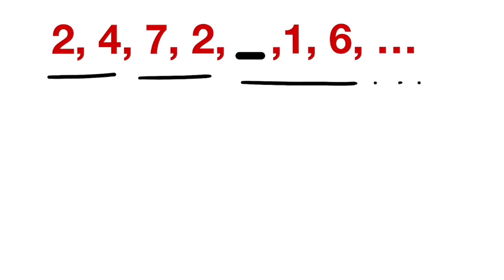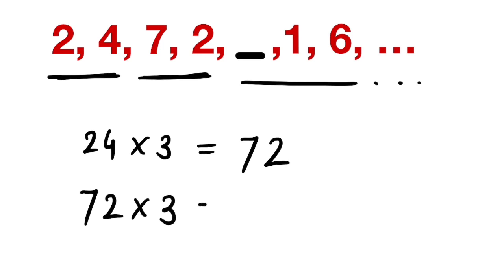Now there is a relation between this 72 and 24. Clearly, this 24 times 3 is 72. And the next term will be 72 times 3. That is, we are multiplying by 3. So this gives us 216.